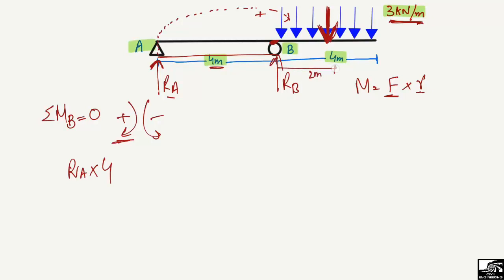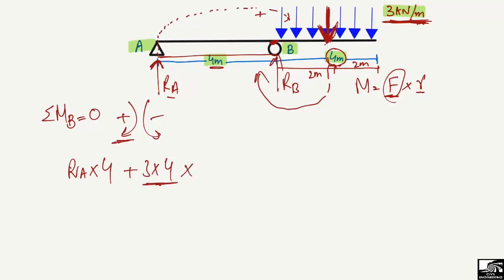The centroid of the 4-meter UDL is at 2 meters from each end. To convert the UDL to a point load, we multiply by the distributed length: 3 kN/m × 4 m. This load acts downward, creating a clockwise moment, so it is positive. The moment arm from the point load to B is 2 meters. So the moment equation at B sums to zero.